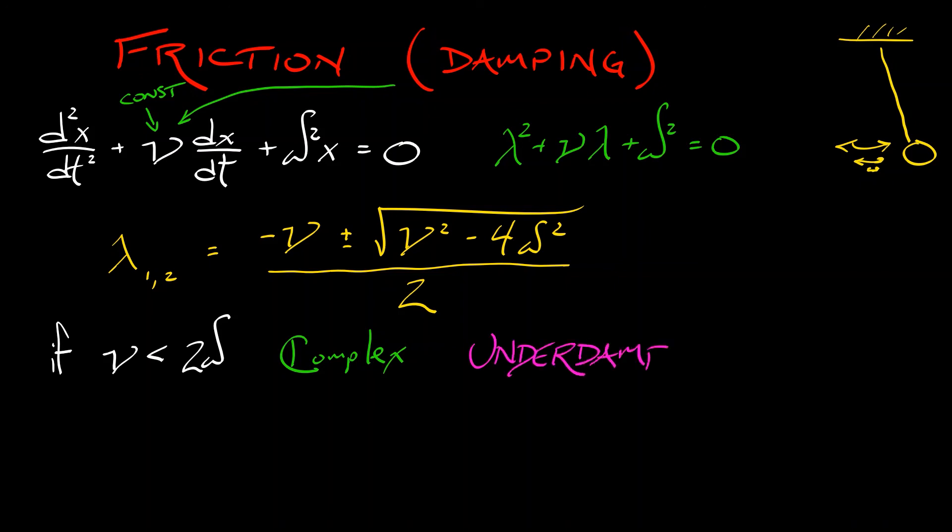And what that means is that you have what is called an underdamped solution. So the pendulum swings back and forth with an exponentially decreasing amplitude.